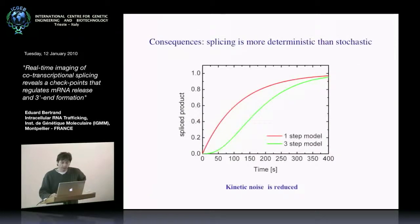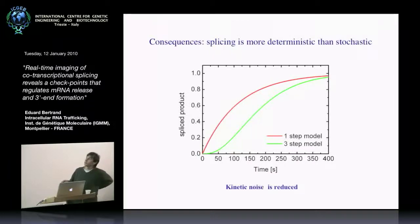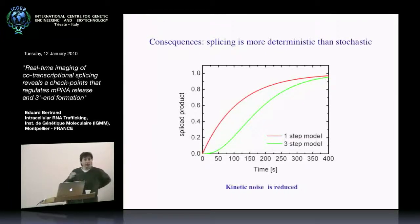The importance becomes apparent when you look at the rate of appearance of the spliced product. With a one-step model, you expect a simple exponential for appearance of spliced RNA. With a three-step model, you get a more sigmoidal curve, and the more steps you add, the sharper the sigmoid. With a single-step model, some molecules splice very quickly while others splice very late — you have a wide distribution in the splicing rate. In contrast, with a three-step model, all molecules tend to splice at about the same rate, meaning every molecule takes the same time to complete the splicing reaction.